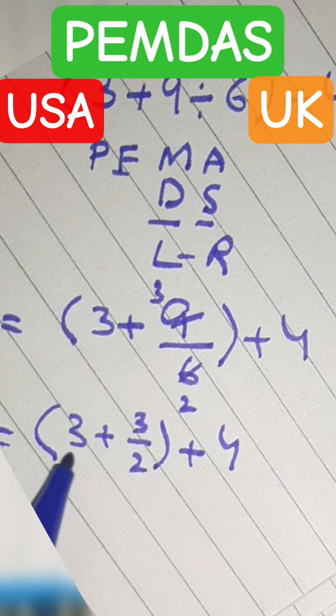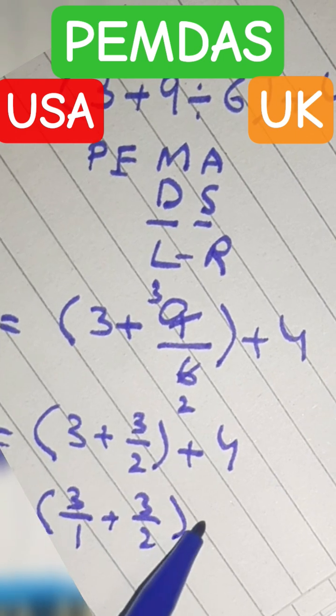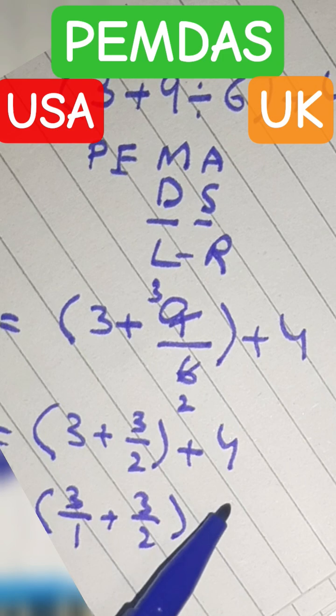In three, the denominator is one, so three upon one plus three upon two plus four.